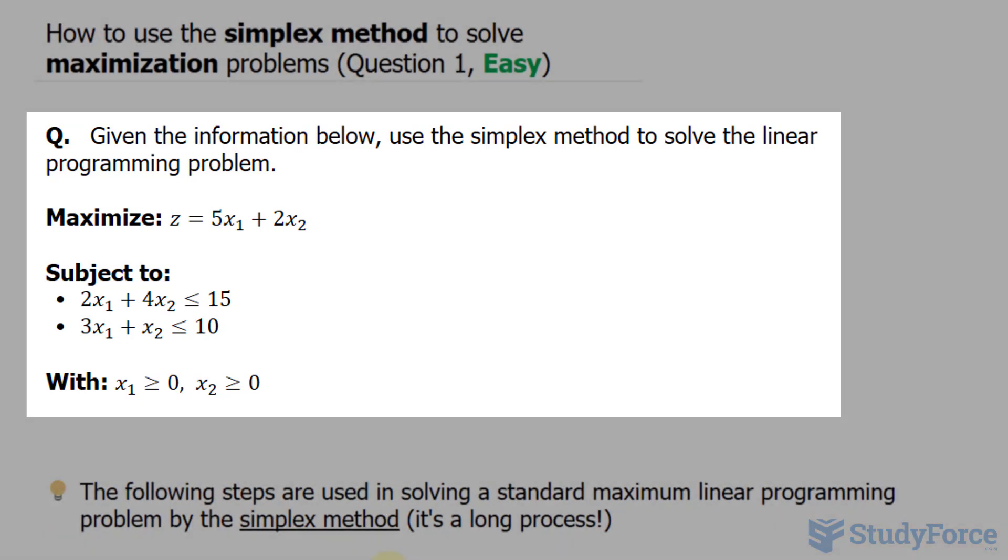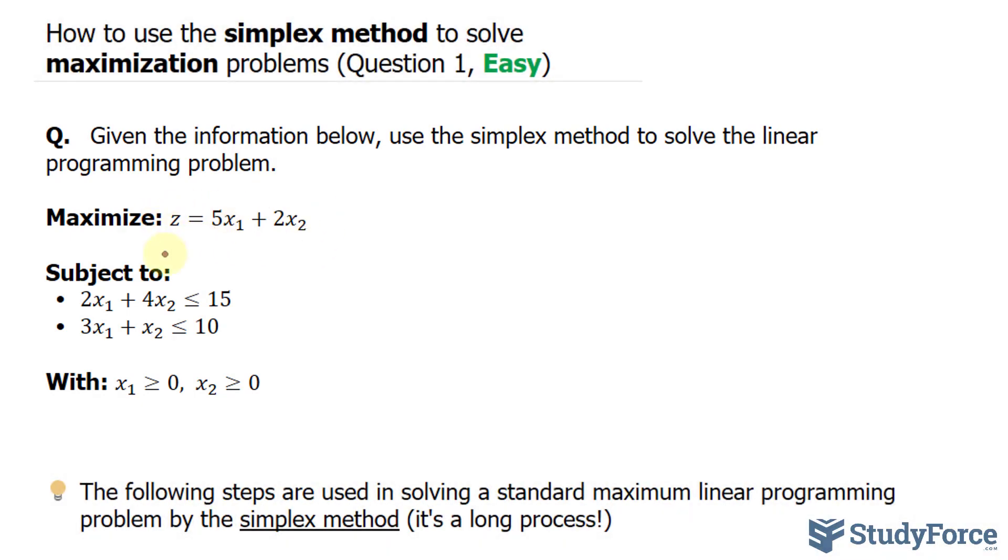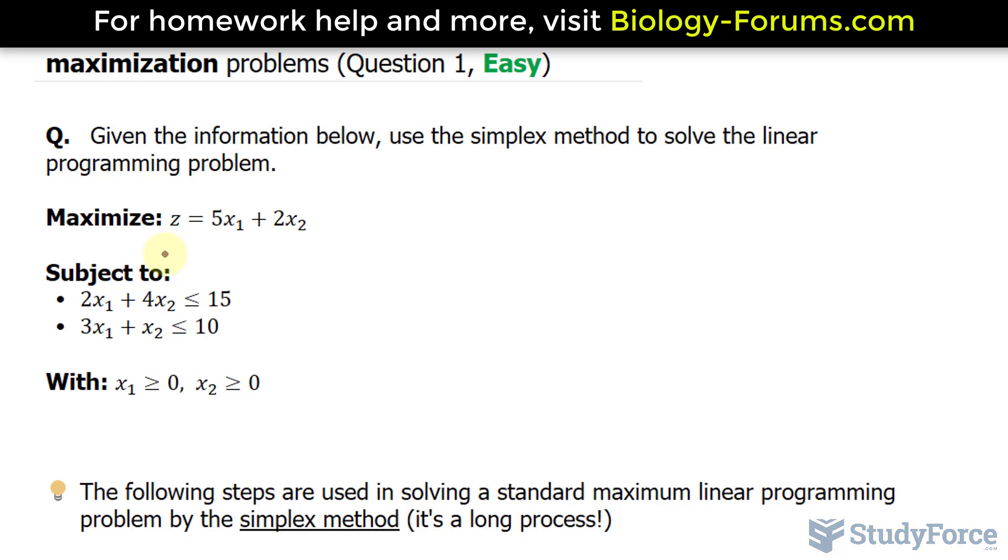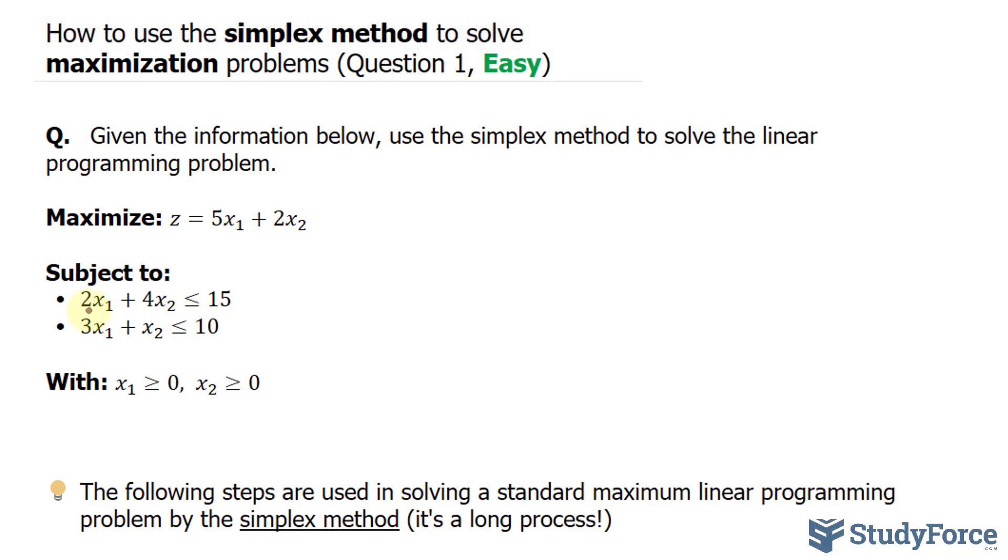What we've been given is the objective function, shown right here. We need to use the objective function to find the optimal solution. We've also been given these two constraints with two variables. I've given this question a difficulty rating of easy. The questions that are more difficult have three or more variables, and we will tackle those later on in this series. Also, we've been told that x sub 1 is greater or equal to 0, and x sub 2 is the same. Therefore, they're both positive.